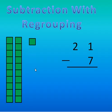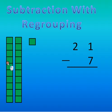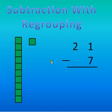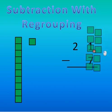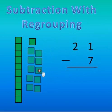So what I have to do is called regrouping. I can't just break blocks off of these groups of 10. But I can move one of these over and trade them for 10 ones. And that's what I'm going to do — I'm going to move out one of my groups of 10 and bring in 10 ones.